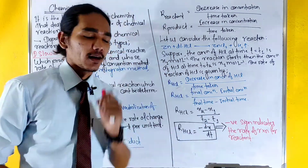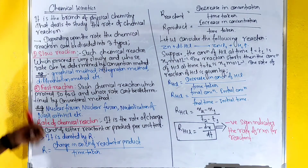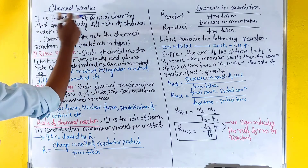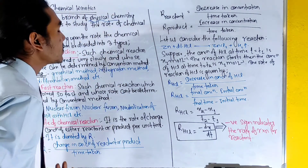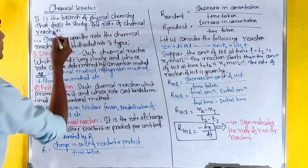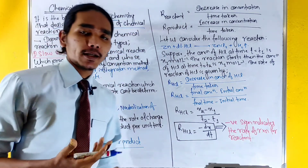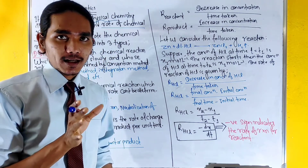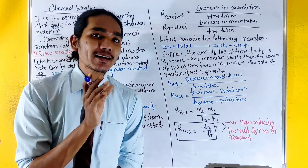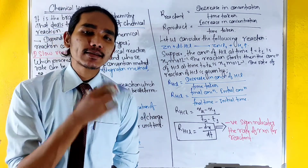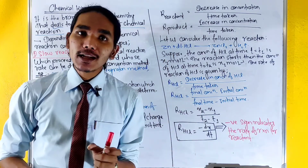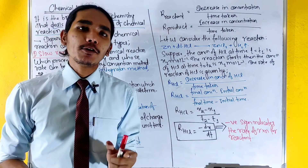We want to define chemical kinetics. It is the branch of physical chemistry that deals with the study of the rate of chemical reactions. The topics we study in this part include chemical kinetics, chemical thermodynamics, chemical equilibrium, and ionic equilibrium.